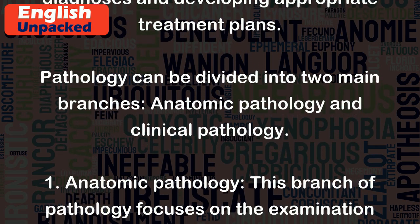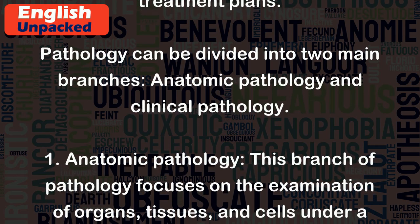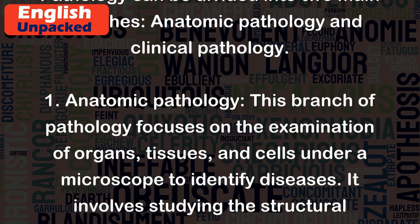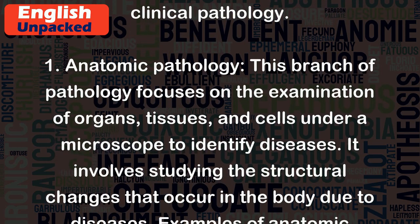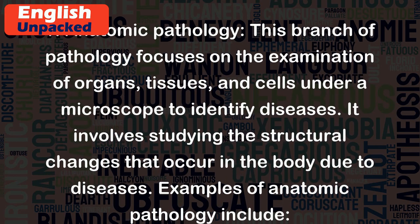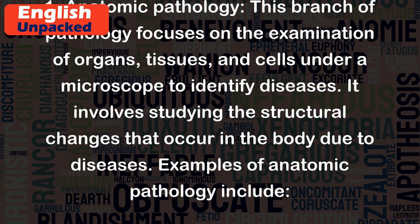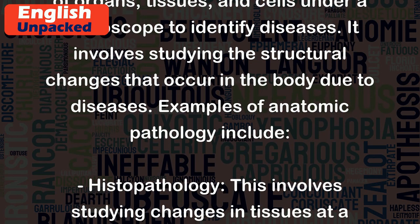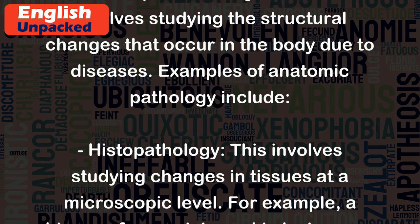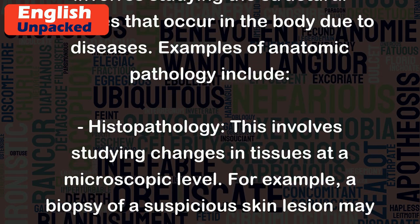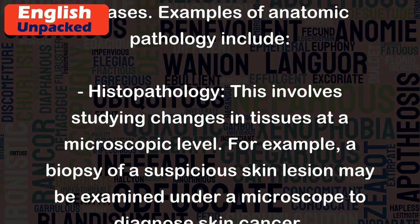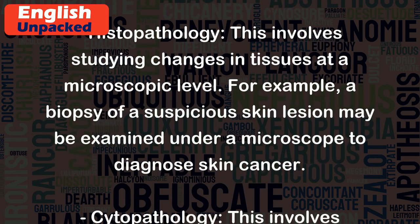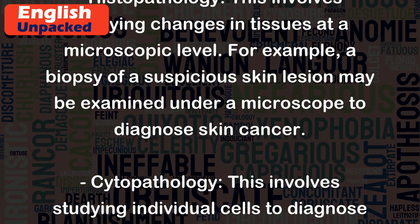Anatomic Pathology: This branch of pathology focuses on the examination of organs, tissues, and cells under a microscope to identify diseases. It involves studying the structural changes that occur in the body due to diseases. An example is histopathology, which involves studying changes in tissues at a microscopic level. For example, a biopsy of a suspicious skin lesion may be examined under a microscope to diagnose skin cancer.